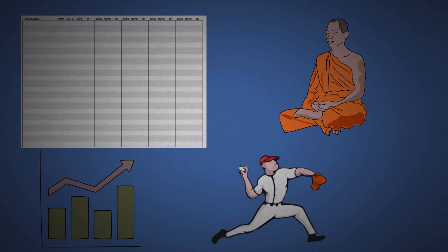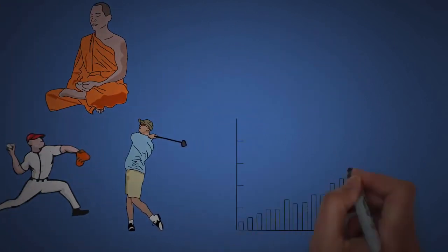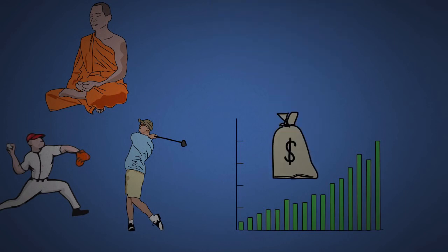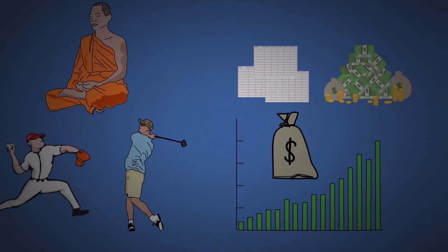Professional athletes track everything. Pitchers know their stats on every pitch in their repertoire. Golfers even have more metrics on their swings. Athletes know that when their stats improve, they win more games and earn more in endorsement deals. Tracking a lot of small things can lead to big payoffs.